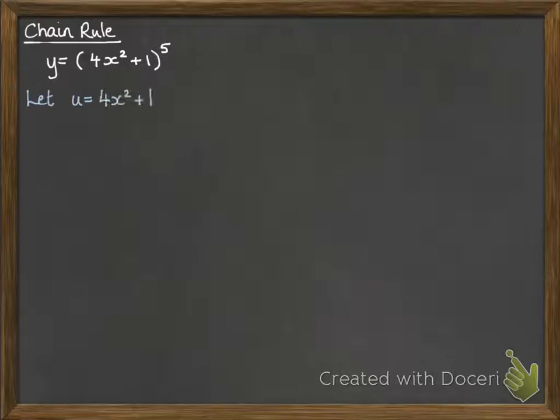We do it by substituting in another term, u, and we let u be the bit inside the bracket. So then y is equal to u to the power of 5. Now, if we differentiate du by dx, then we will get 8x — we're just differentiating that u term.